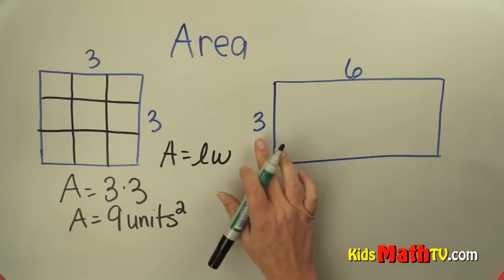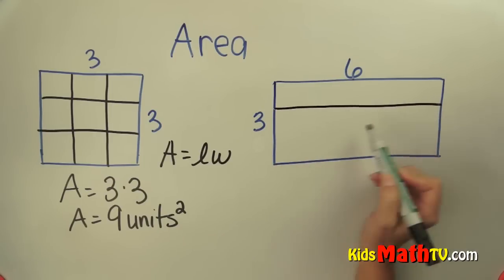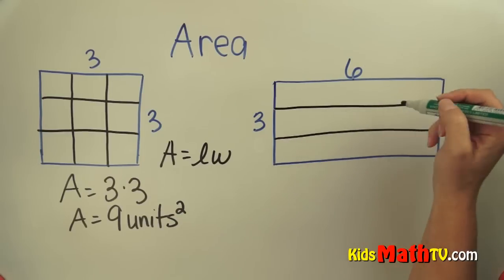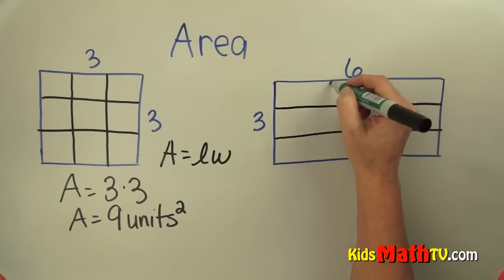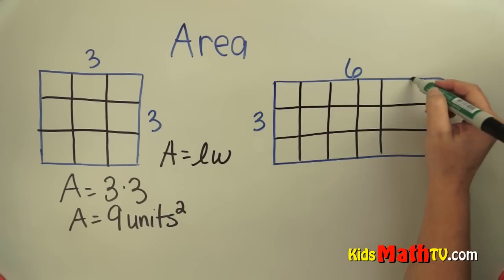To find this one, we have three units here. If I split this into three units, and it's six across here, I'm going to split it about in half first, and split that into three units, and split that into three units.